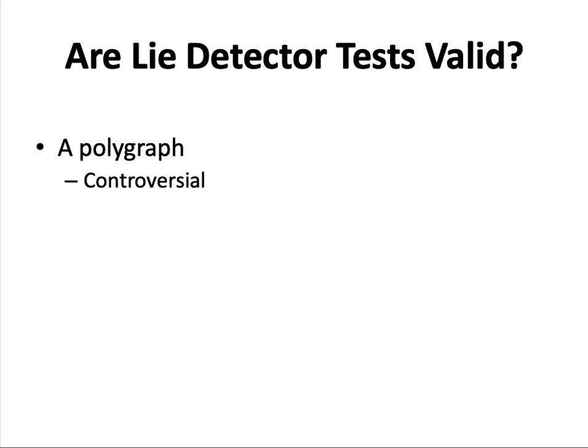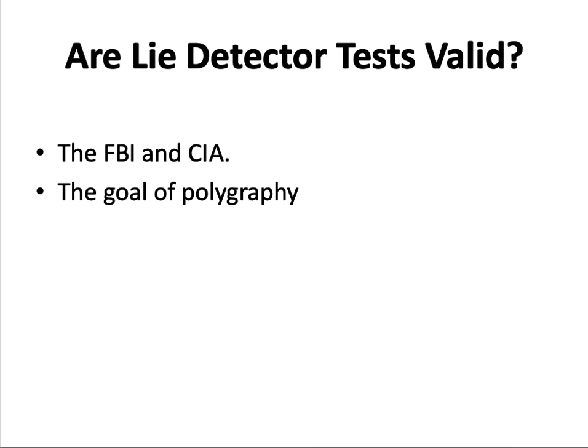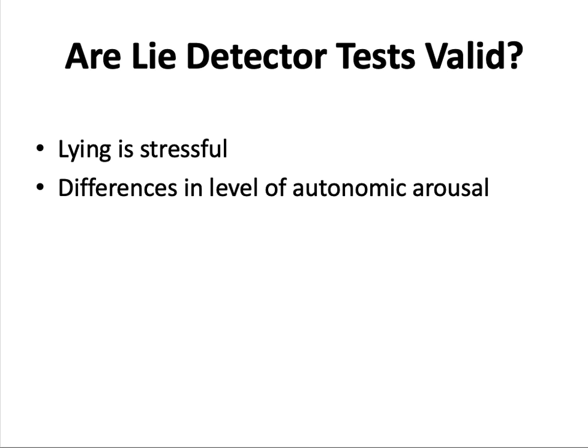As long as there have been lies, people have tried to develop methods for detecting deception. A polygraph is an electronic instrument that assesses the body's physiological responses to questions. It records numerous aspects of arousal, such as breathing rate and heart rate. The use of polygraphs is highly controversial — most courts do not allow polygraph results as evidence, and they are banned in the private sector, yet they continue to be used by criminal investigators and federal agencies such as the FBI and CIA. The goal of polygraphy is to determine a person's level of emotionality, as indicated by autonomic arousal, when confronted with certain information.